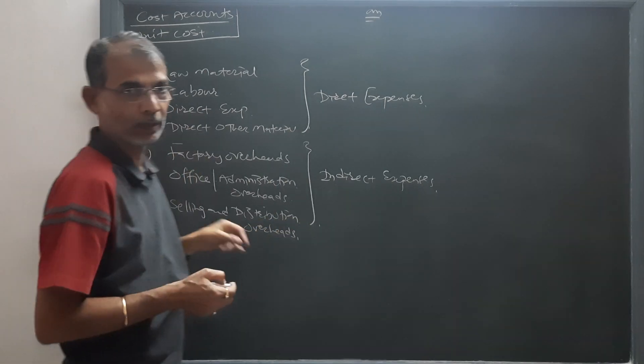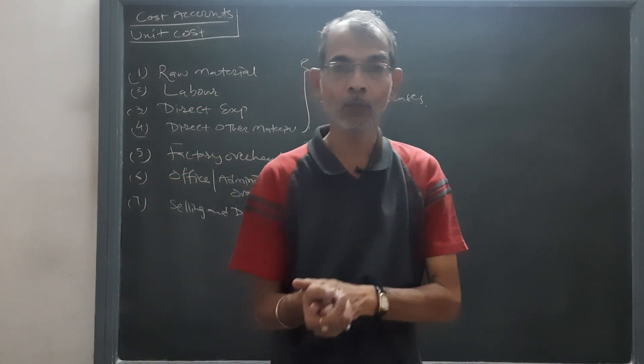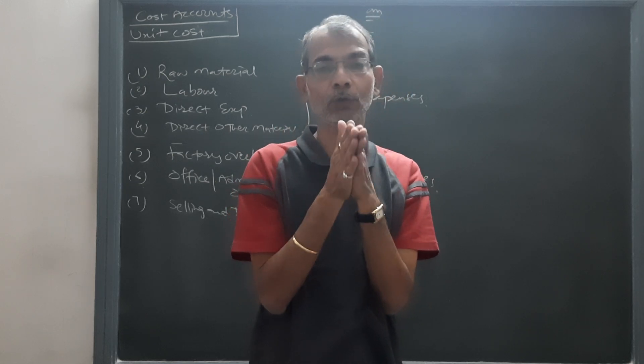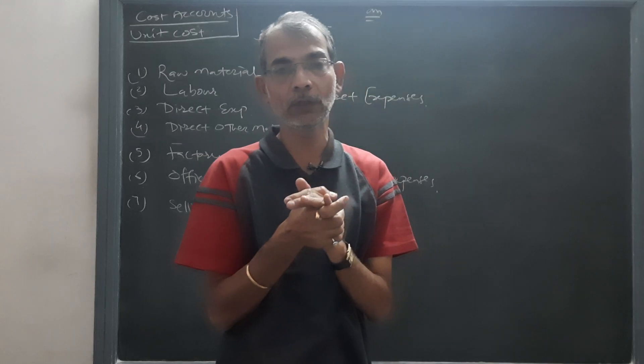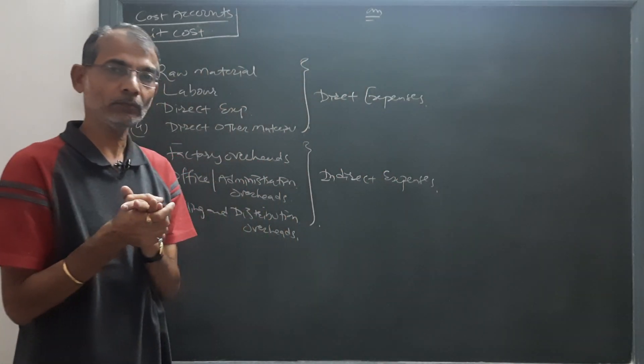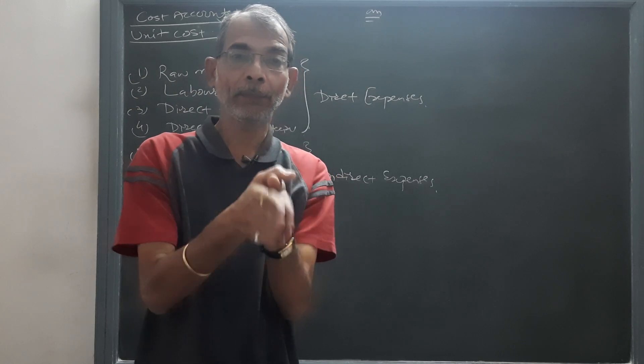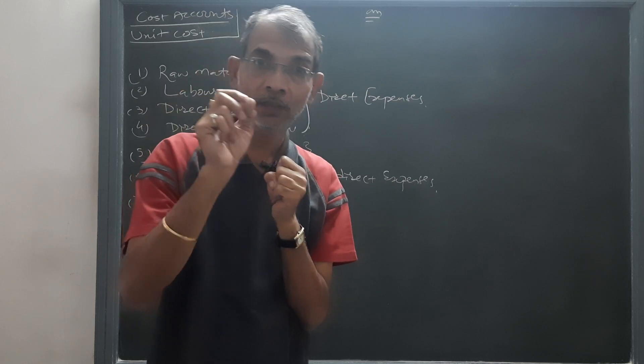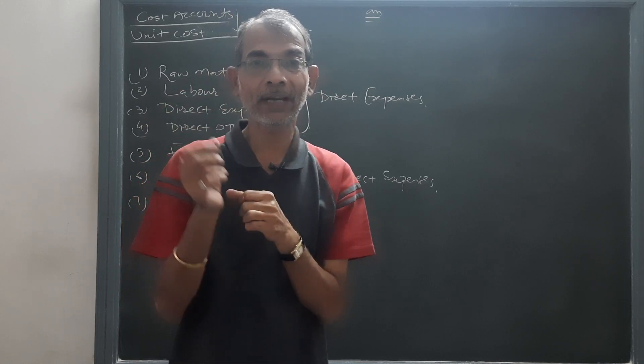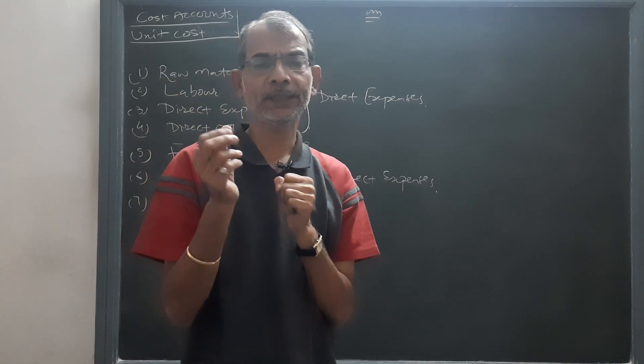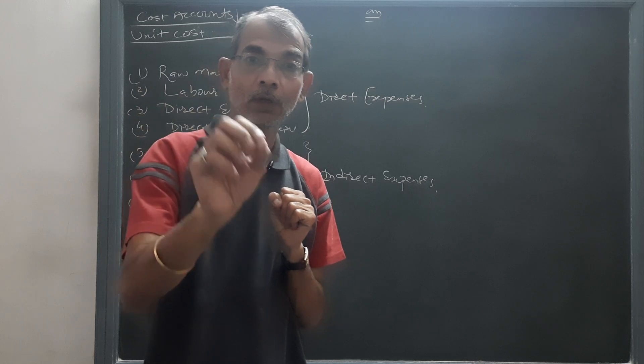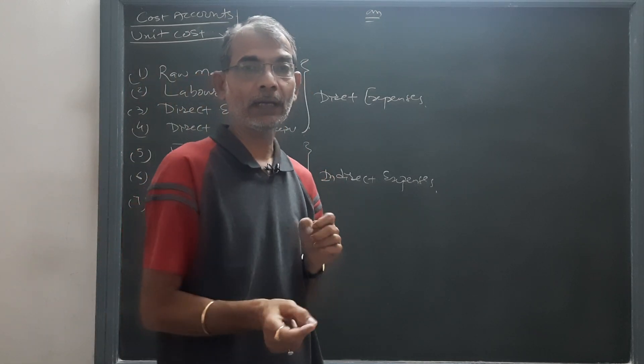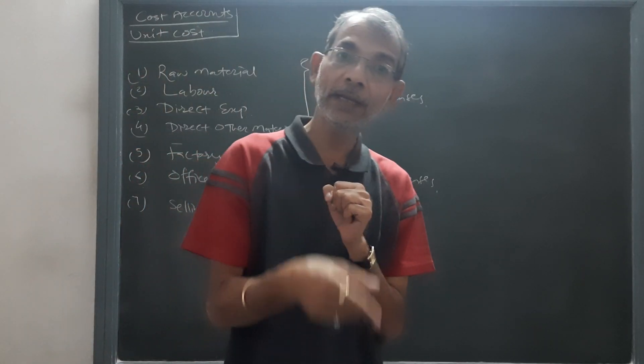At factory there are many expenses which are not directly related to the unit but indirectly related to the unit - as depreciation of plant, repair, maintenance, maintenance of plant, other indirect labor. For example, salary to sweeper, salary to foreman, salary to gatekeeper. These kind of expenses are factory overheads which are indirectly related to the product.